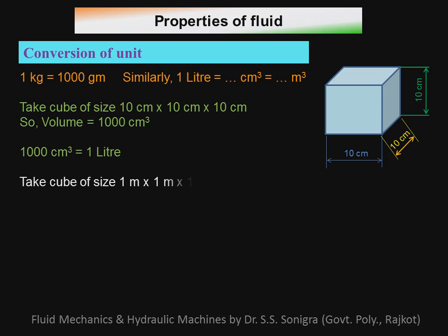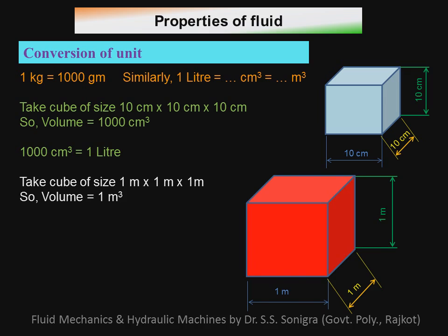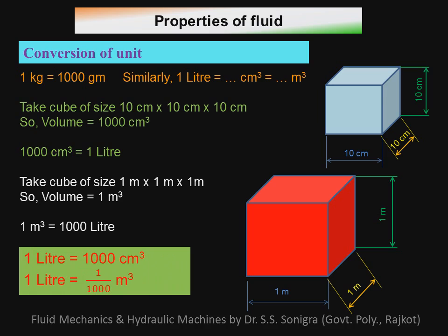This one thousand centimeter cubed is equal to one liter — if you fill water in this tank, its volume is one liter. Now take a cube of size one meter × one meter × one meter; its volume is one meter cubed, and that equals one thousand liters. So one meter cubed equals one thousand liters, and one liter equals one thousand centimeter cubed. Remember these — they will be useful for solving examples based on fluid properties.